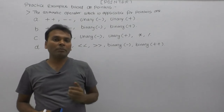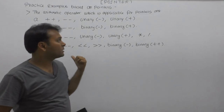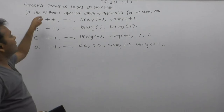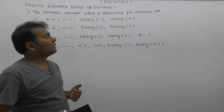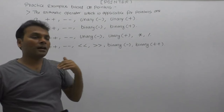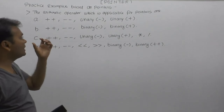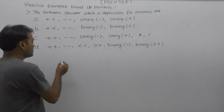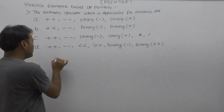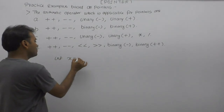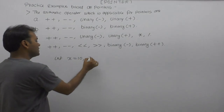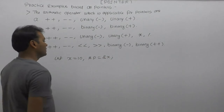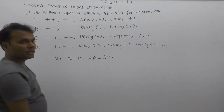This example is based on pointer arithmetic operations. We need to find out valid arithmetic operations for pointers. Consider a pointer setup: int x equals 10, and star p equals address of x. Then this pointer variable p...